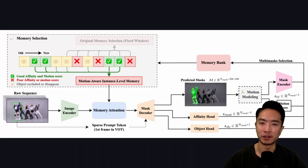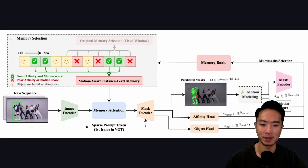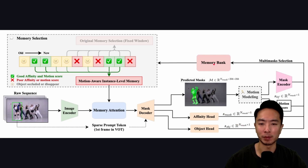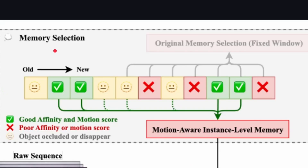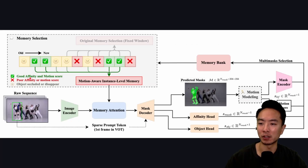Here you can see the architecture of the SAMURI model. The raw sequence goes into an image encoder, then through memory attention to a mask decoder, and the output is the predicted mask. There's also an affinity module and an object head. All of these feed into a memory bank, which passes into a memory selection module. This memory selection component is a key part that incorporates temporal information, allowing the model to leverage past frame data — both good and bad predictions — to help predict the future location of objects.